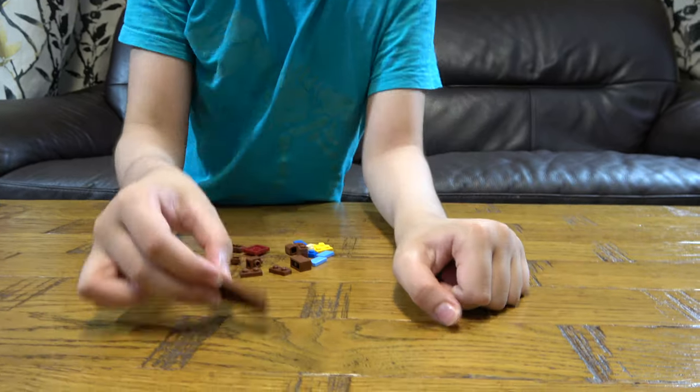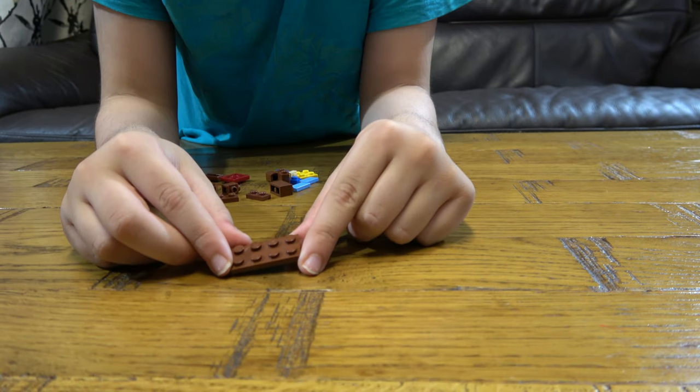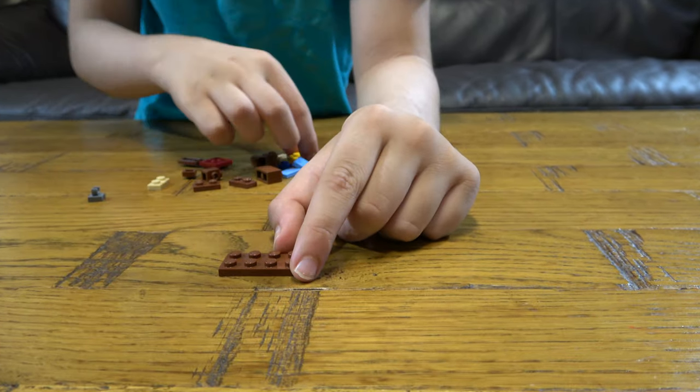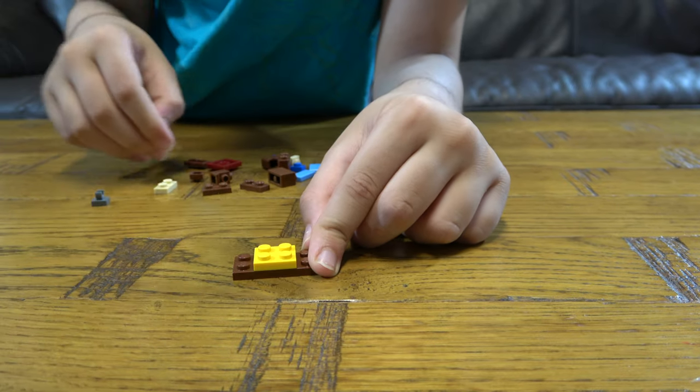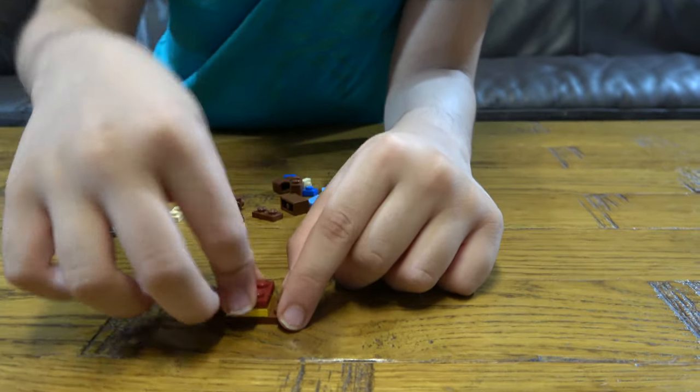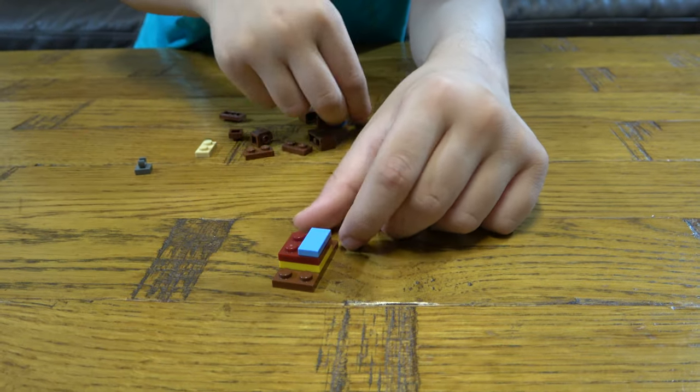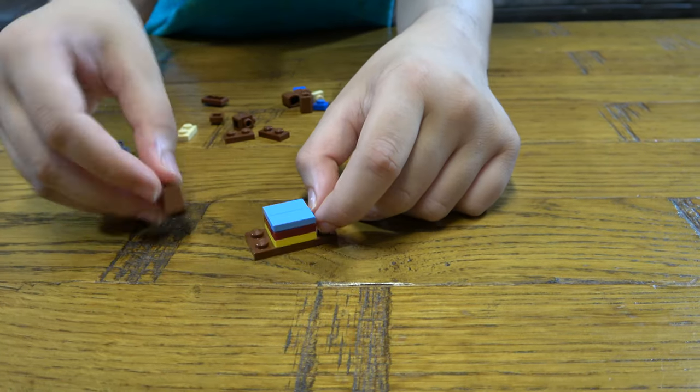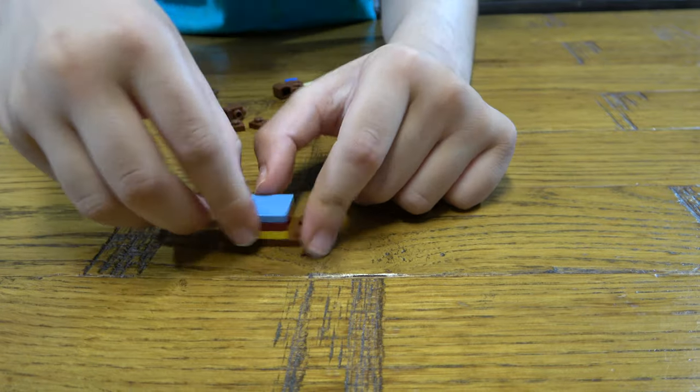First, we get one of these. Then we get one of these, one of these and then two of these. Then you get one of these bricks, you place it there.